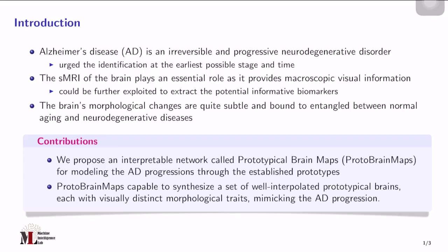Such biomarkers include ventricle enlargement and atrophy in certain brain areas, for instance in the hippocampus, temporal lobe, and others. However, it is a non-trivial task, since the brain's morphological changes of AD subjects are quite subtle and also tend to entangle between normal aging and neurodegenerative disease.